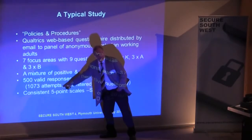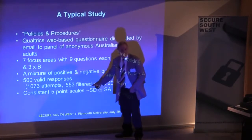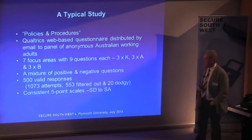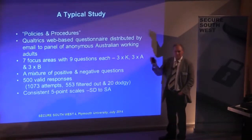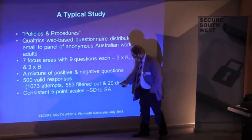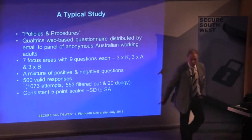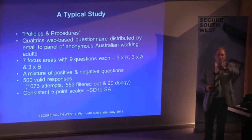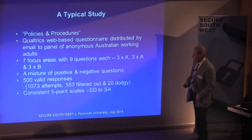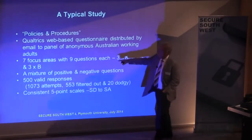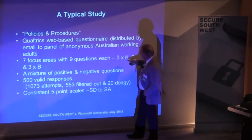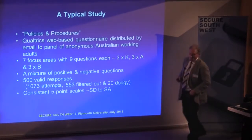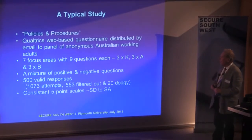There were 1,073 attempts, but 553 were filtered out via the survey — if you didn't have policies in your organisation, out; if you never used a computer, out. We filtered 20 more out because they were dodgy responses — these people get paid per survey and just go down one side, so you make sure your questions are both negative and positive. We used the seven focus areas with nine questions each: three knowledge questions, three attitude questions, and three behaviour questions, to come up with a number for information security awareness.